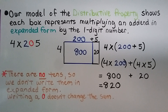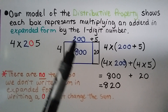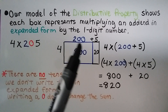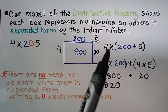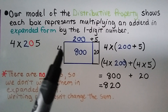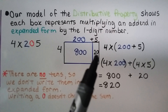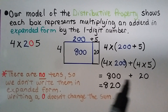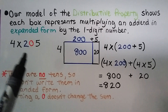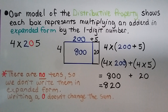Our model of the distributive property shows each box representing multiplying an addend in expanded form by the one-digit number. For 4 times 205, we expand as 200 plus 5 and multiply times 4: 4 times 200 is 800, and 4 times 5 is 20. We add 800 plus 20 to get 820. There are no tens, so we don't write them in expanded form — writing a 0 doesn't change the sum.